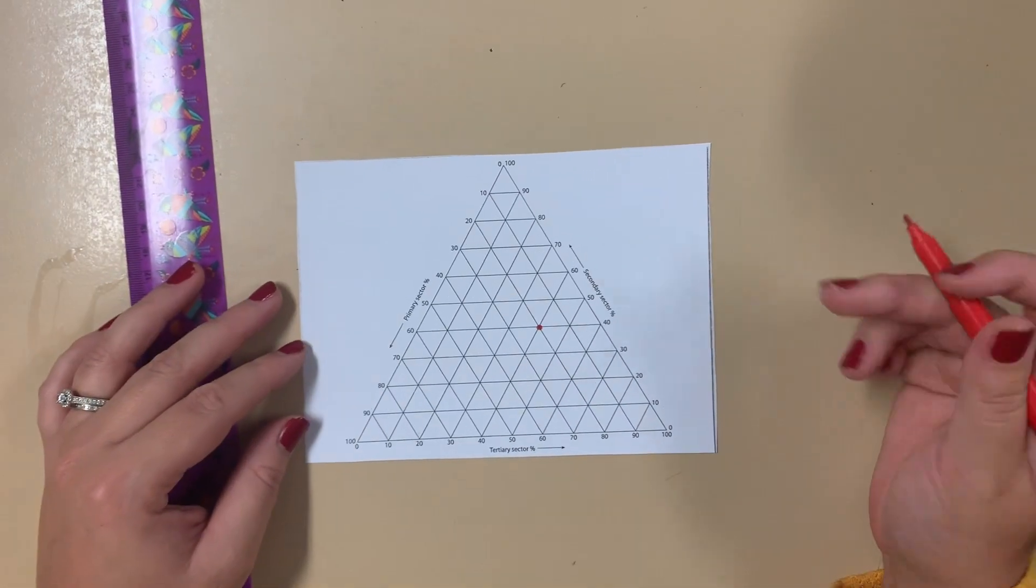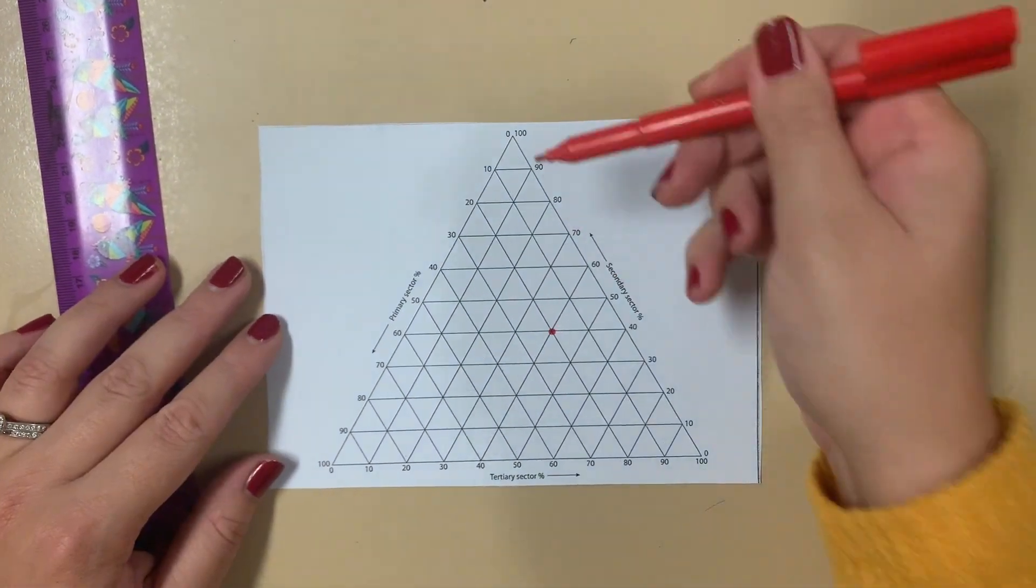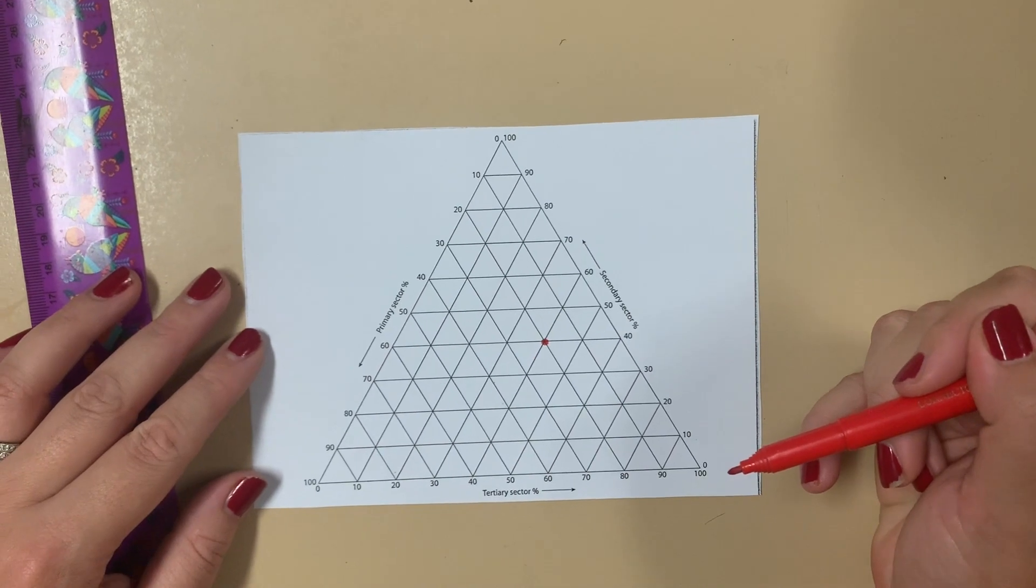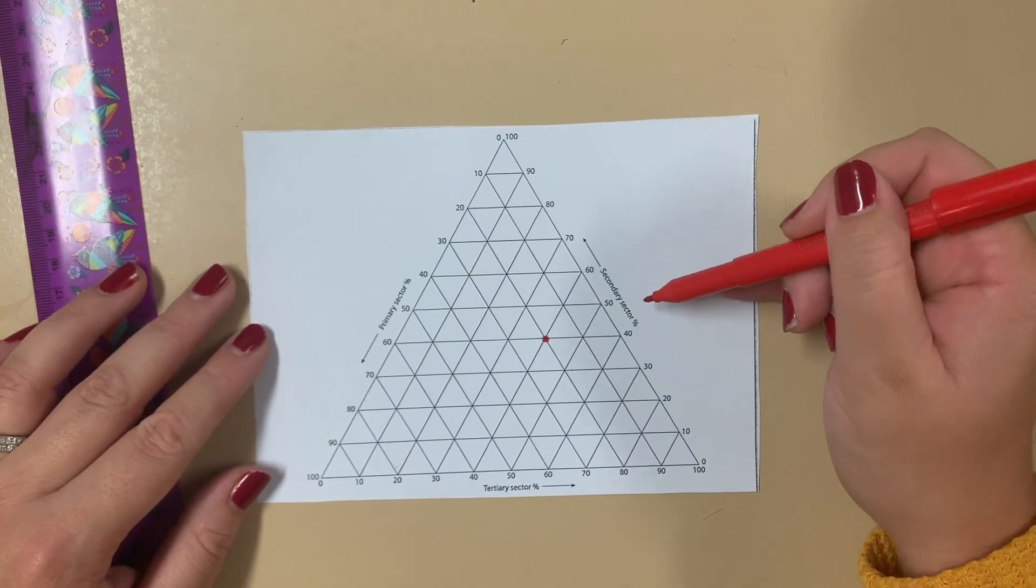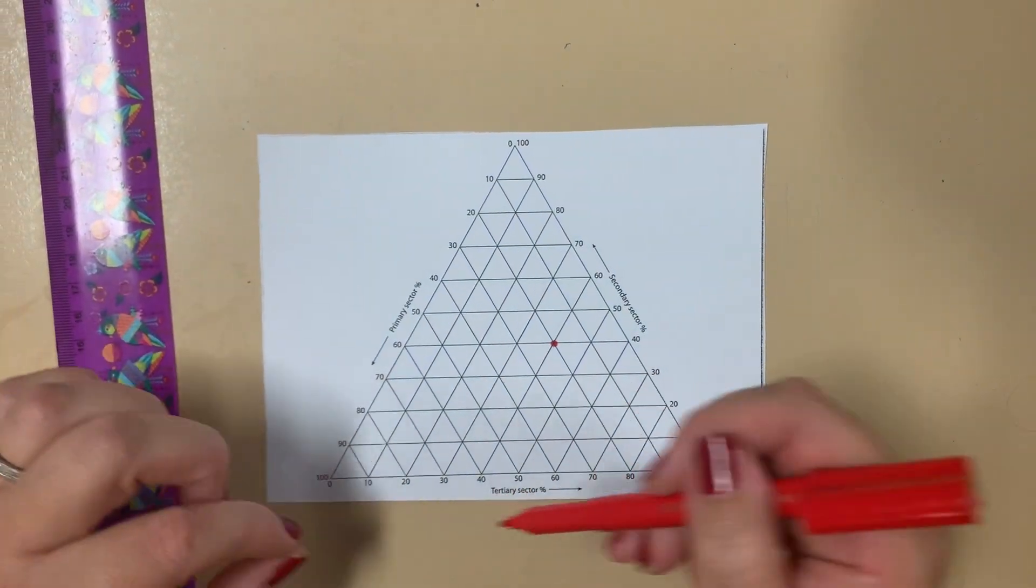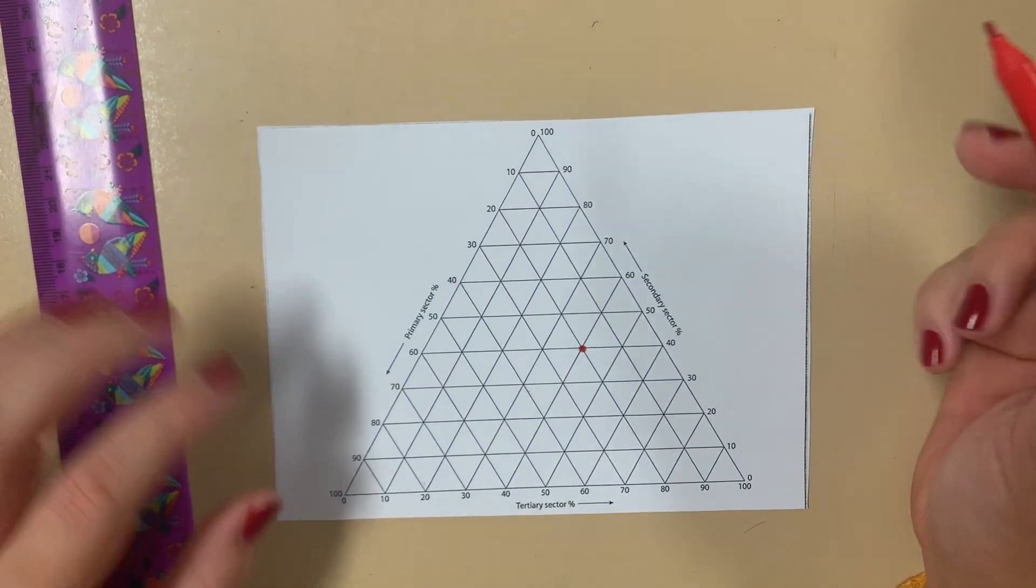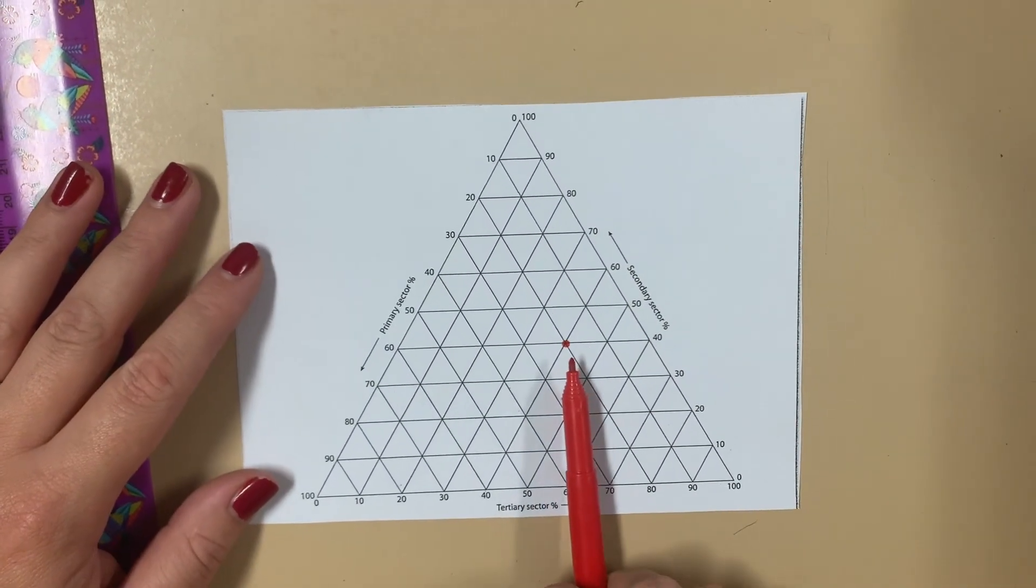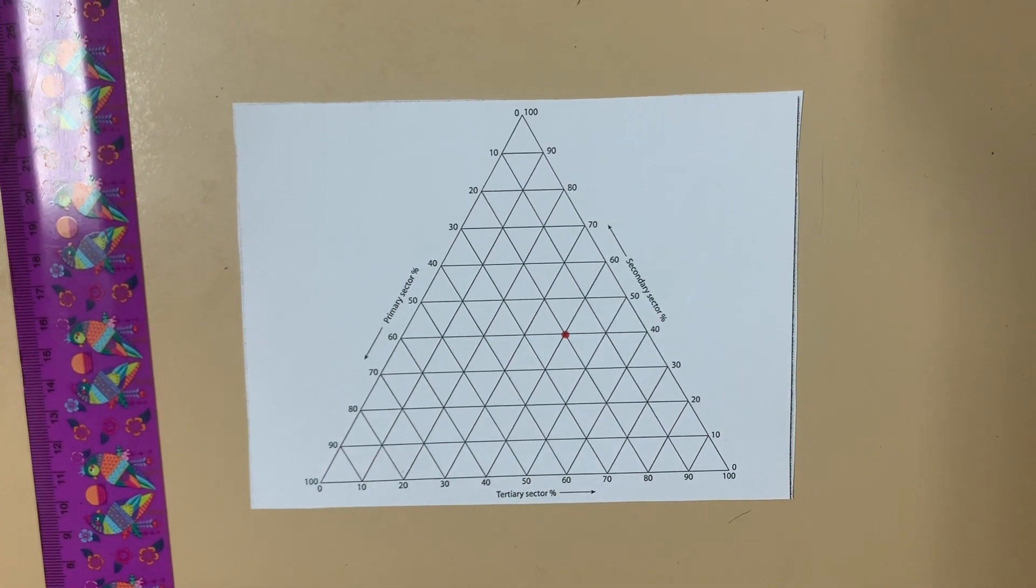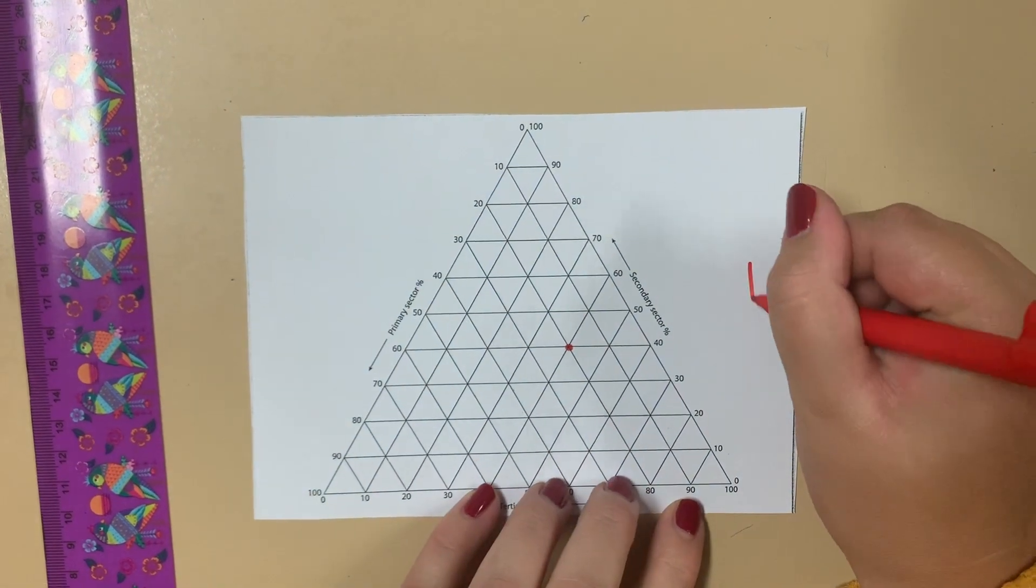Okay guys, so we're here with an example of a ternary graph and what you can see is when we want to do three different variables we use a triangle because it has three sides. With industries we're going to look at primary, secondary and tertiary. In this example we've got secondary here, primary and tertiary. These can go on any of these axes as long as they're labeled. So we're going to show you an example of how we would find out the industry breakdown for this red dot. We're going to pretend this red dot is a country and this is how we would find out its breakdown. The first thing I do when I teach ternary graphs is to make sure that we always start on this side here.